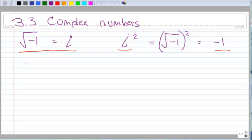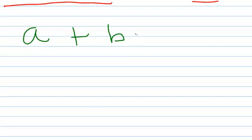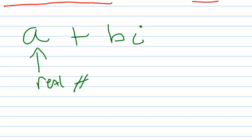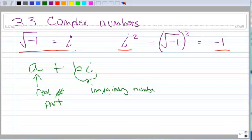So let's talk about what makes a complex number. We have the form a plus bi. We say that the a part is the real number part, and the bi part is the imaginary number part.